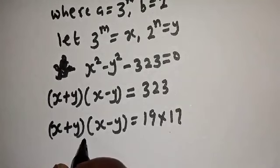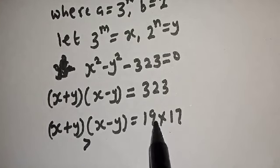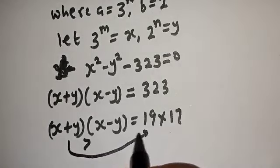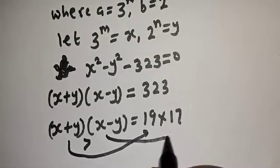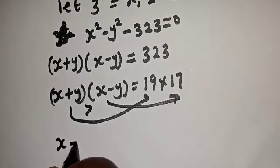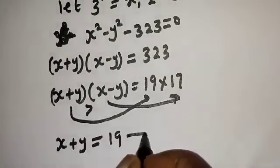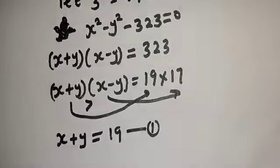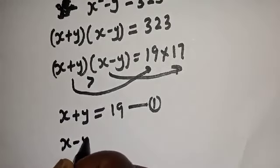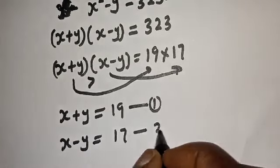From here, s plus y is greater than s minus y, and 19 is greater than 17. Therefore, s plus y equals 19 — let's call this equation 1 — and s minus y equals 17 — let's call this equation 2.